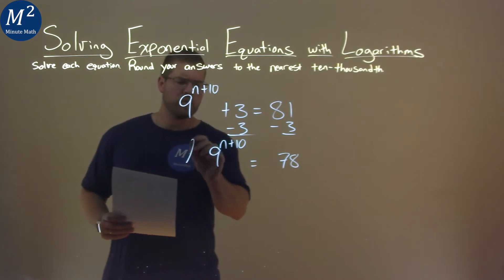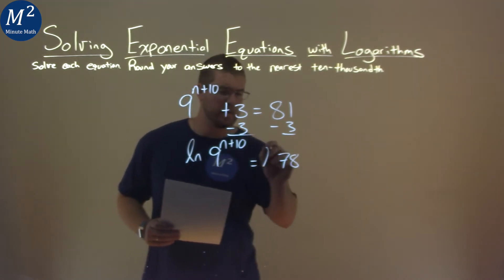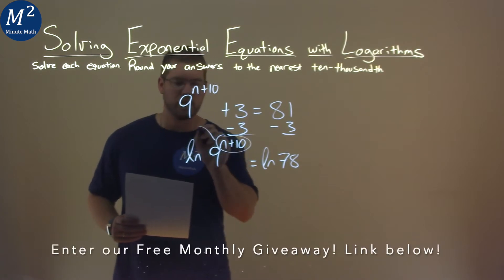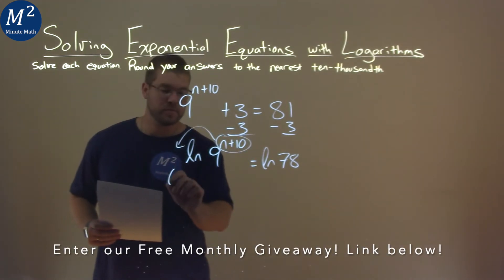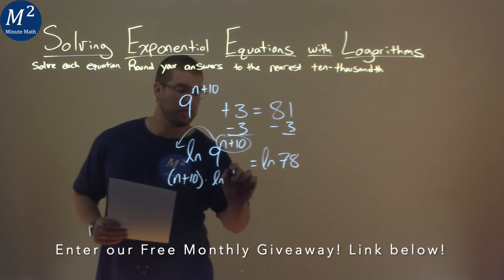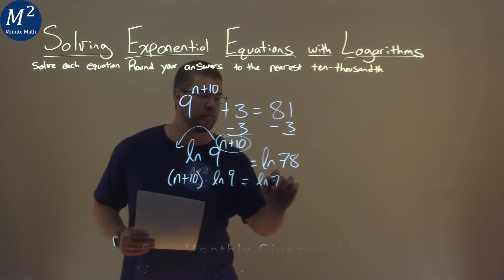Now, we're allowed to take the natural log of both sides of the equal sign here. In doing so, that causes this exponent to come out front with multiplication. So we have n plus 10 now multiplied by natural log of 9, and that's equal to natural log of 78.